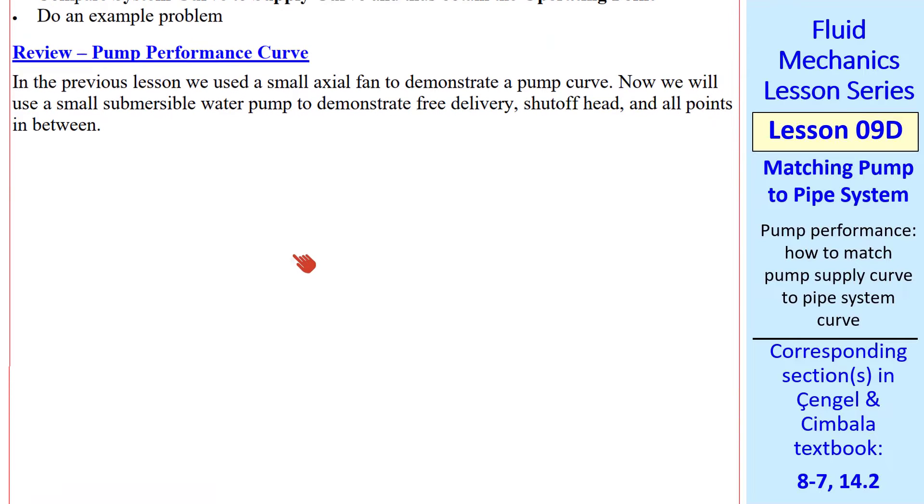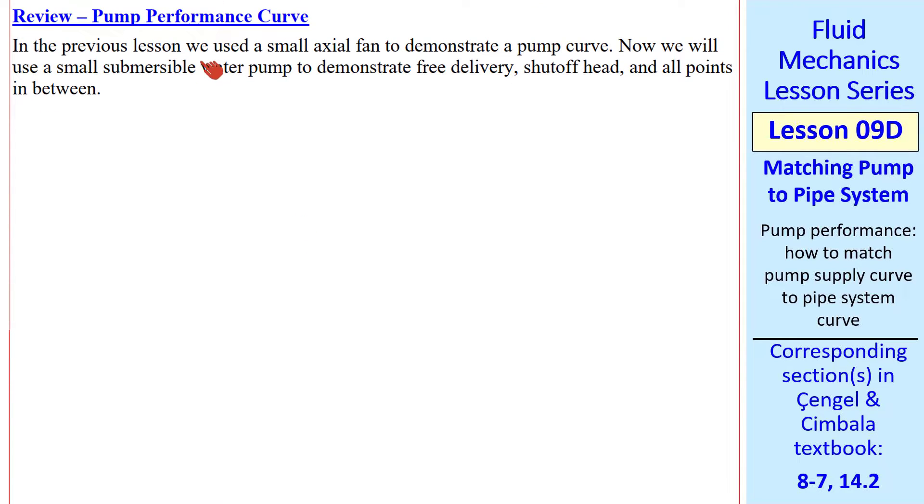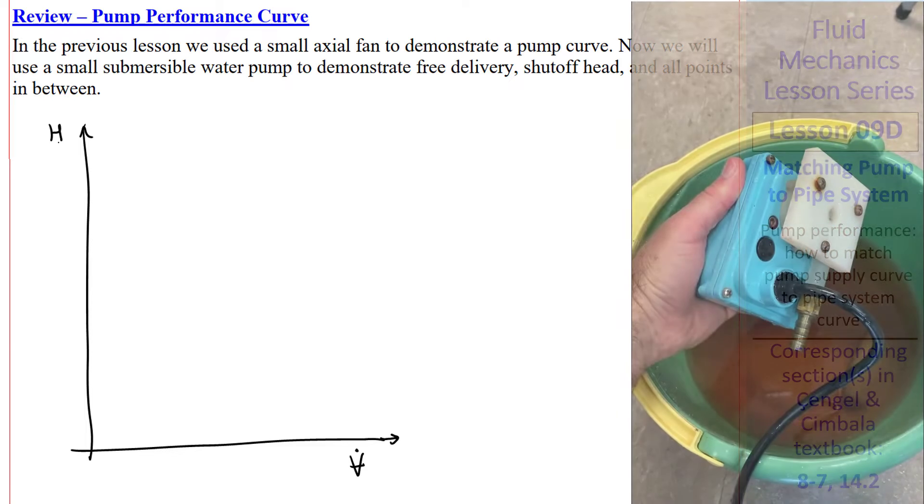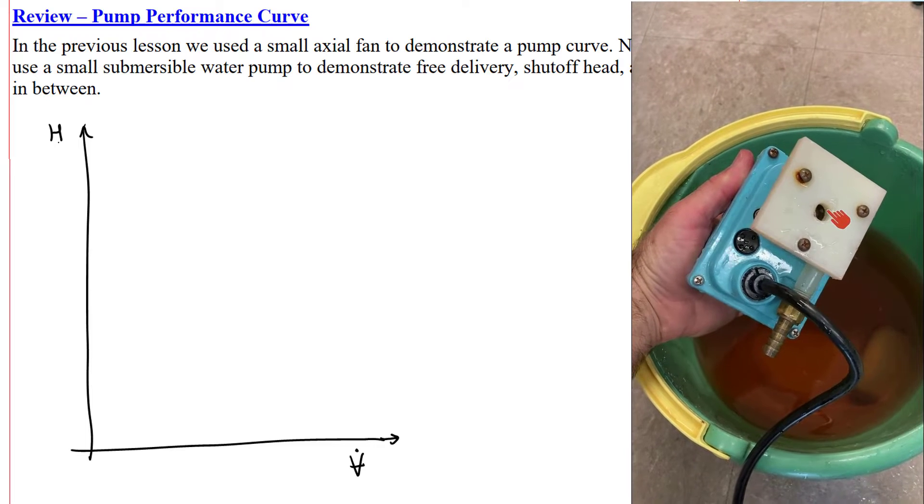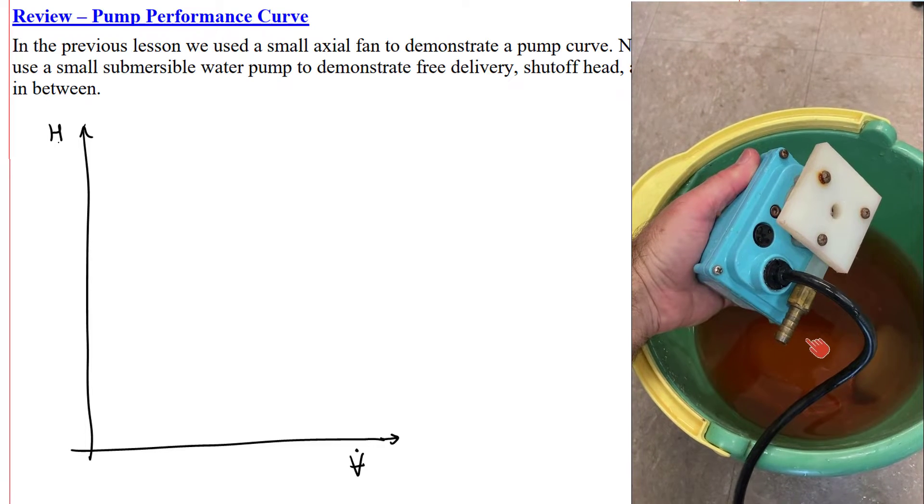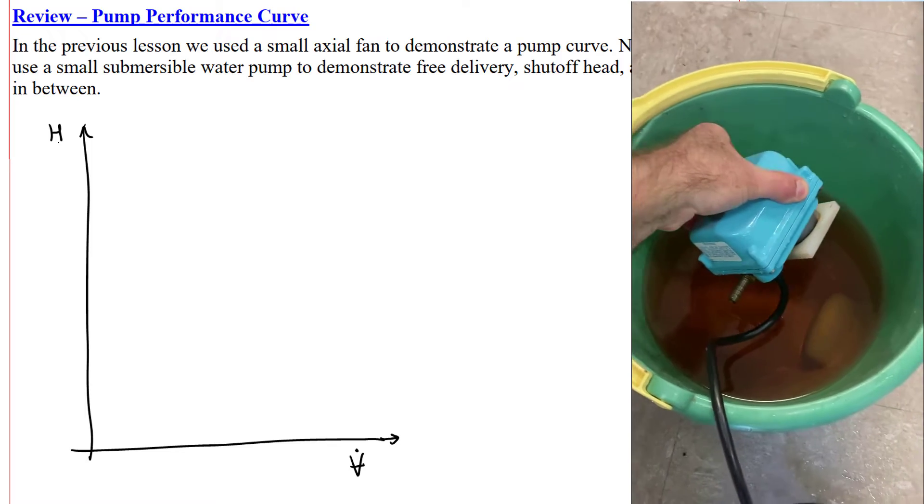First let's review the pump performance curve. In the previous lesson we used a small axial fan. Now we'll use a small submersible water pump. I'll draw axes for V dot, the volume flow rate, and H, the pump head. In my demo I have a small submersible pump. Flow enters through the inlet on the white plastic part and exits through the hose barb. We submerge it in the water.